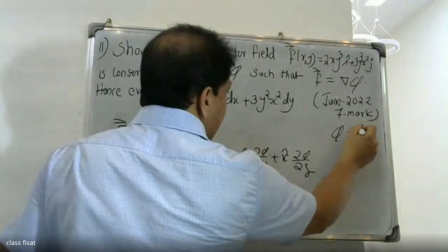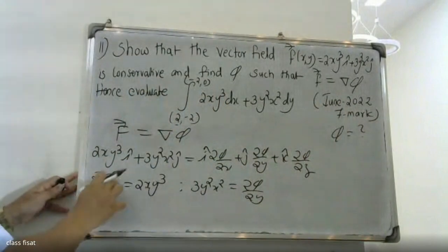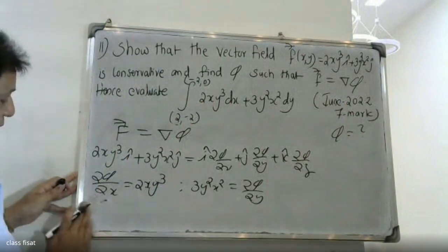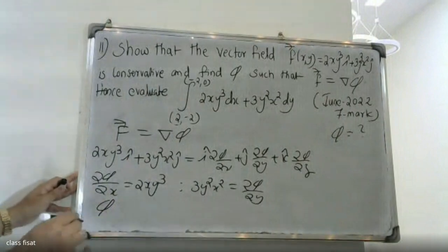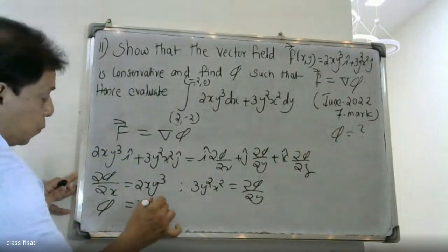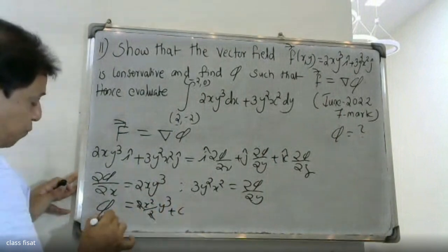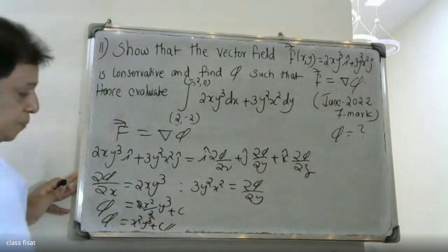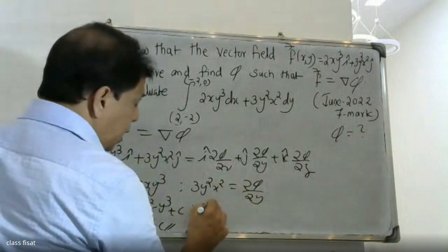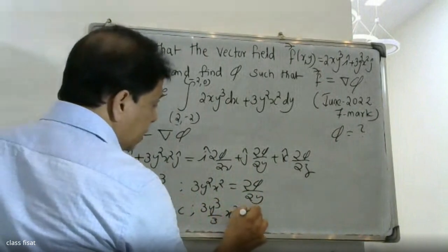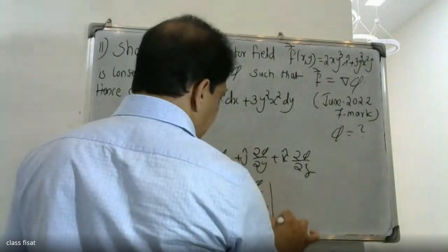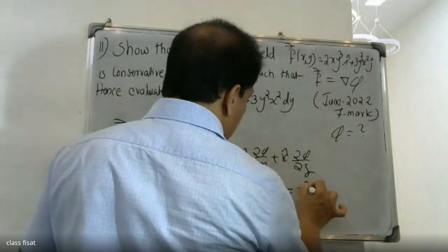We integrate ∂φ/∂x with respect to x. The integral of 2xy³ with respect to x gives x²y³. Simplifying, three y³ divided by three times x² gives y³ times x², which equals φ plus c.